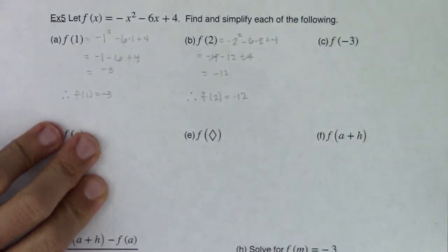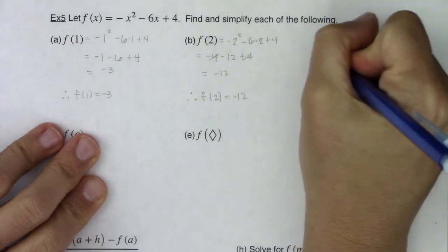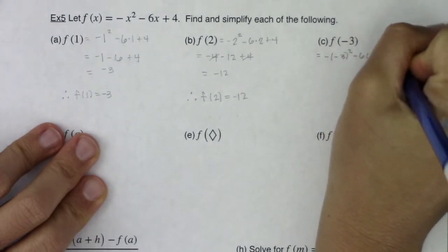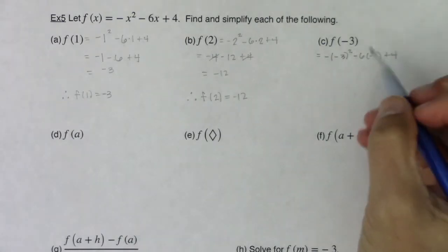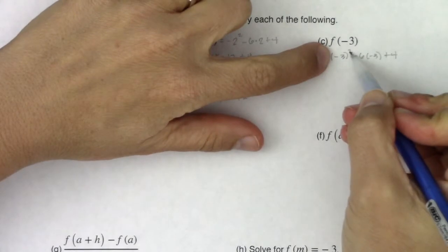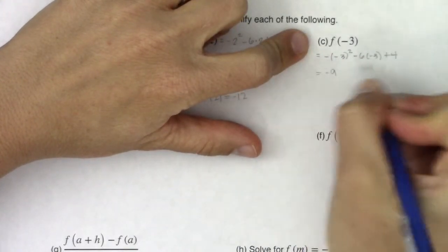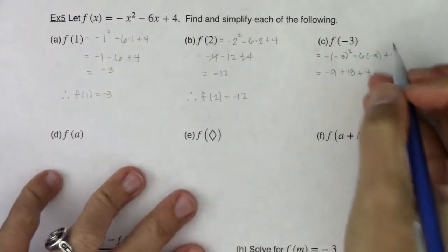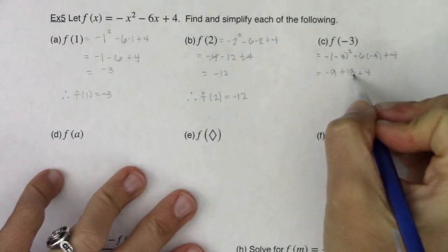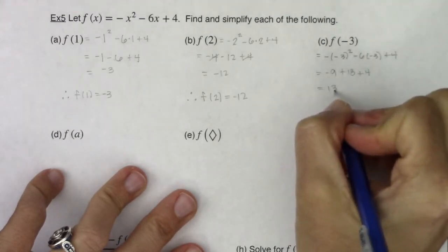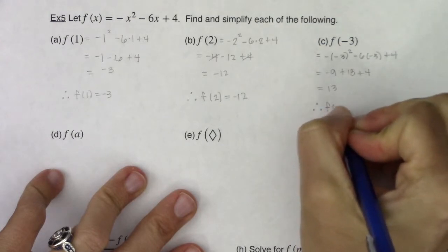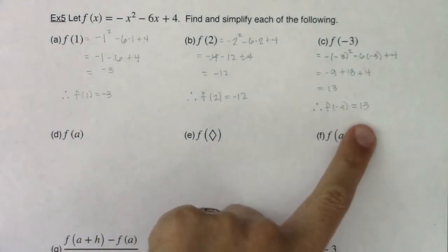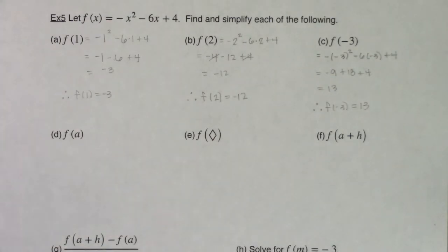Let's try f(-3) — I need to be careful with all the negative symbols. This is negative of (-3) squared minus 6 times (-3) plus 4. Careful with PEMDAS: (-3) squared is 9, but 9 times negative 1 is negative 9. Negative 6 times negative 3 gives us plus 18, then plus 4. Negative 9 plus 18 is 9, and 9 plus 4 is 13. So f(-3) = 13, giving ordered pair (-3, 13). From parts a, b, and c I have three ordered pairs.